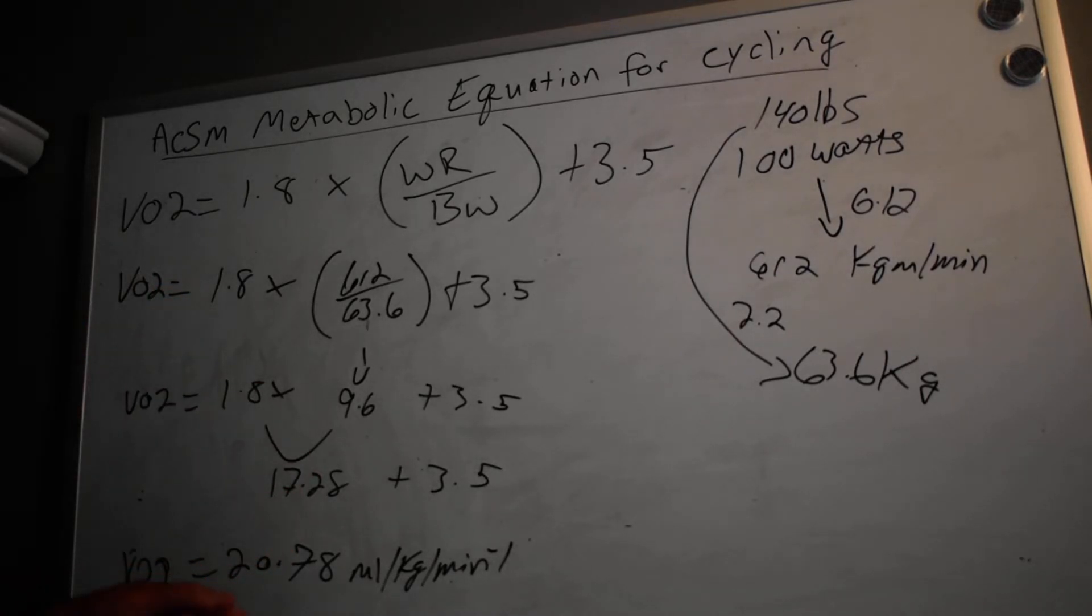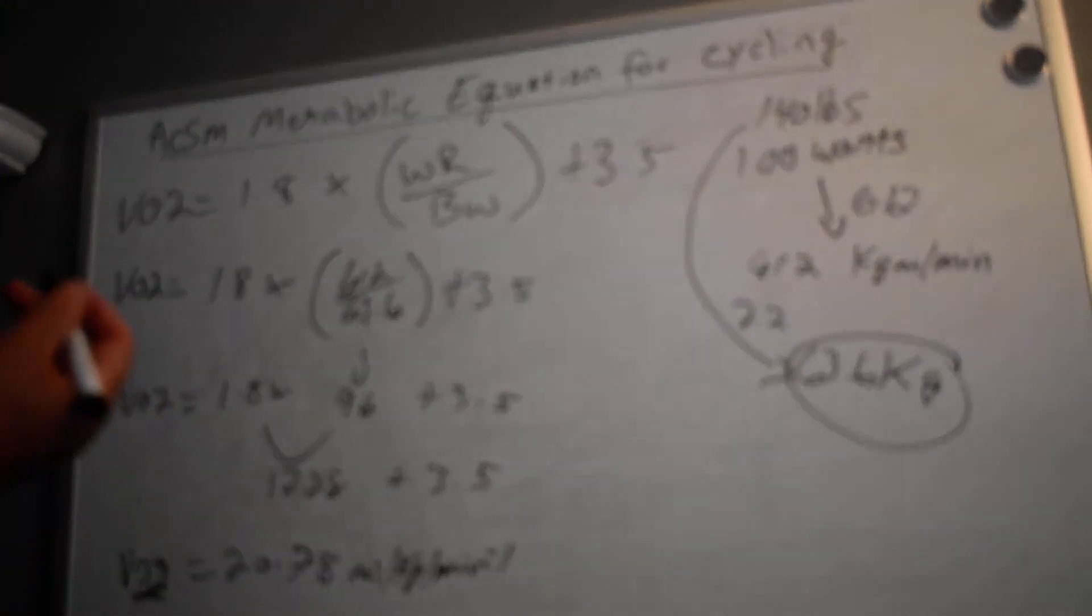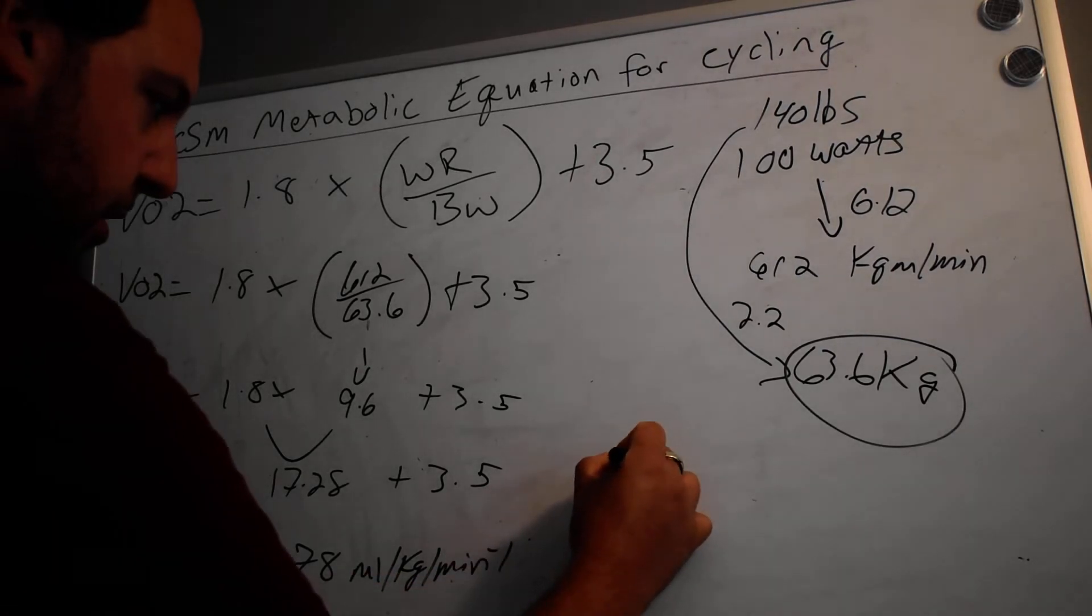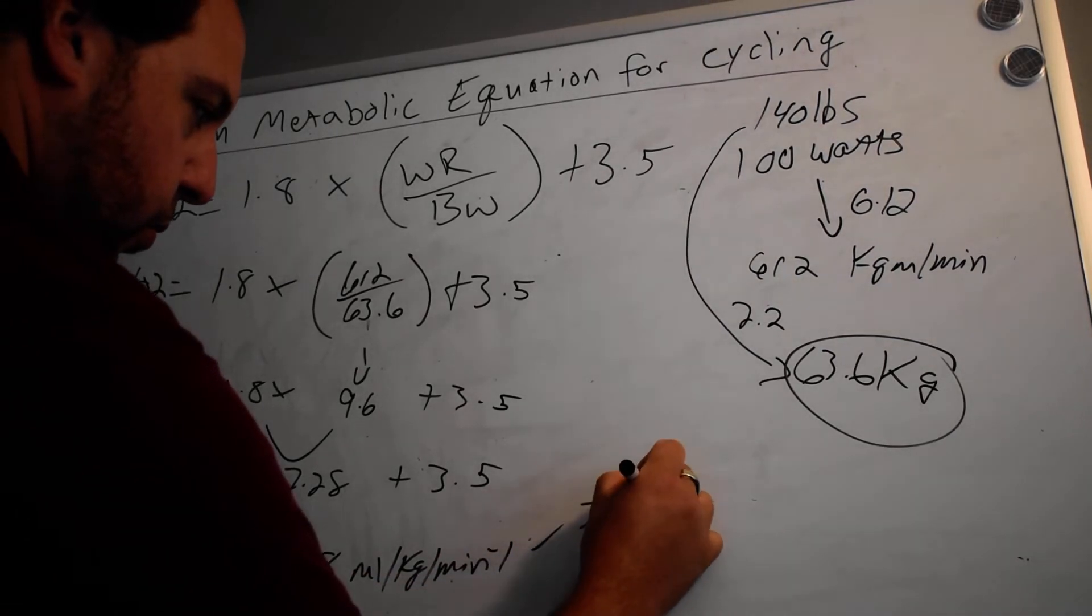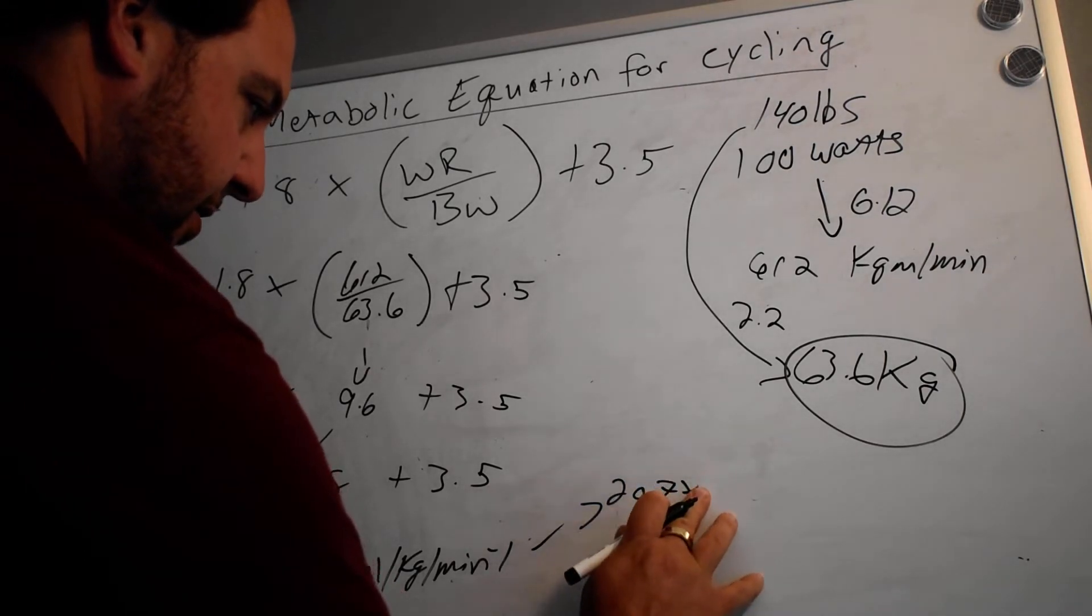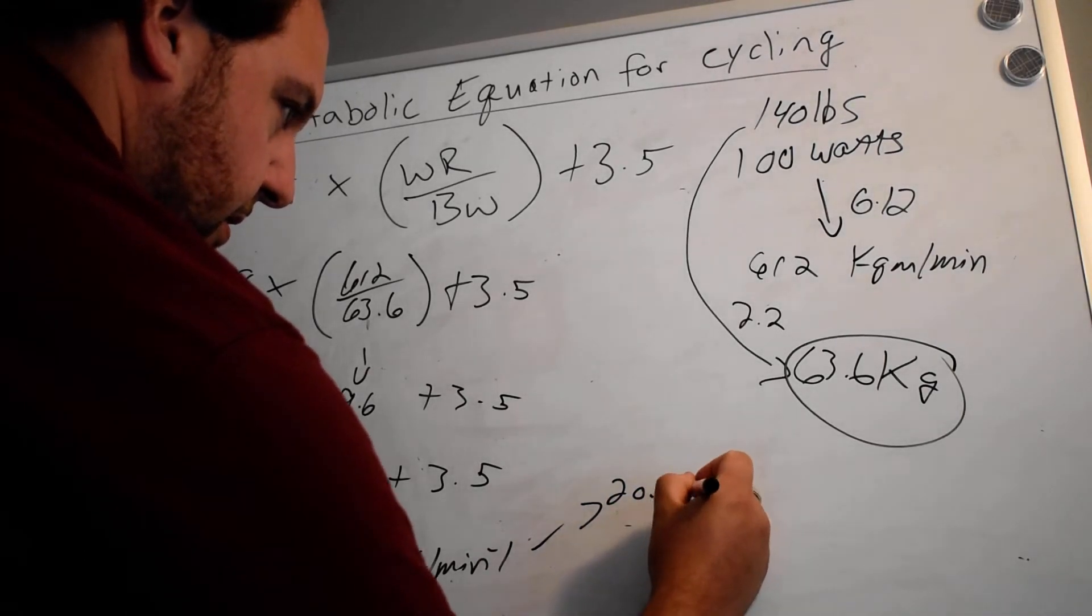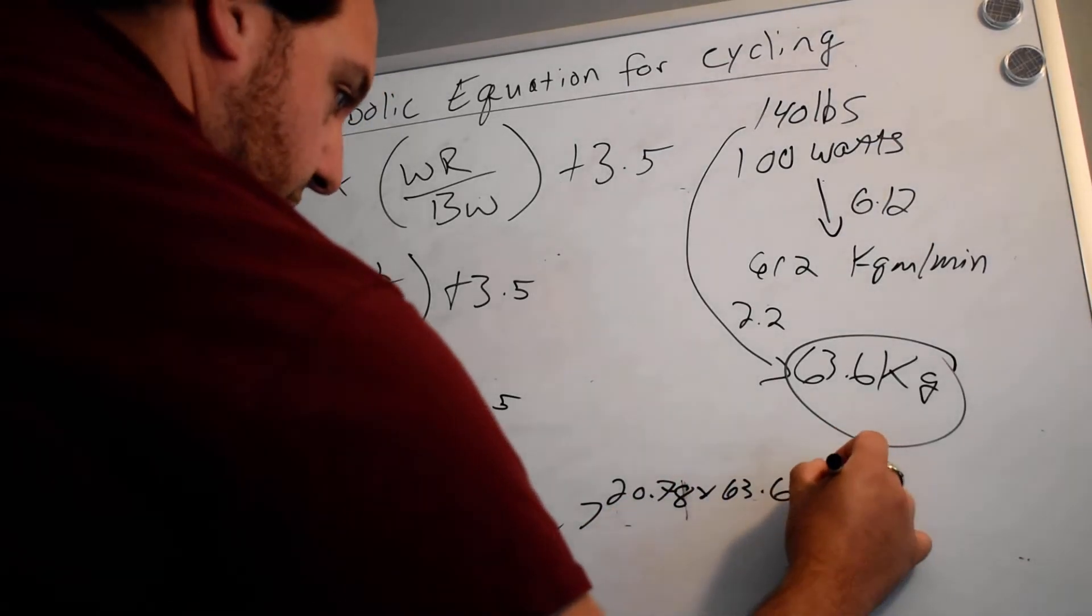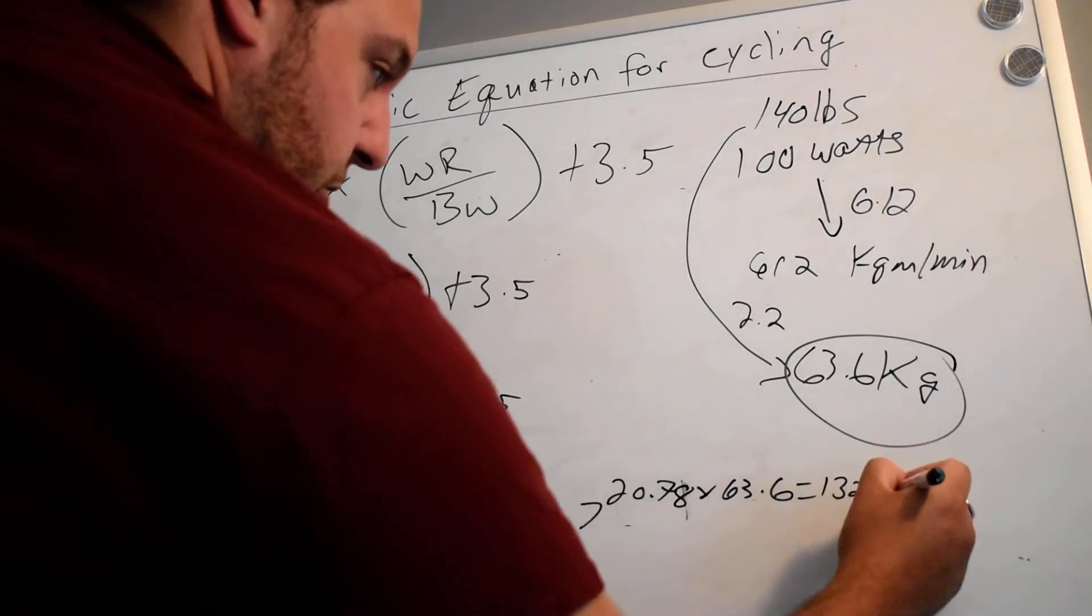To convert from a relative VO2 into an absolute VO2, there's really only one thing you need—you need the body weight in kilograms, which we have. Then simply all you do is take the body weight in kilograms and multiply it by this relative VO2. Let's do 20.78 times 63.6. That's going to give us 1321.6.